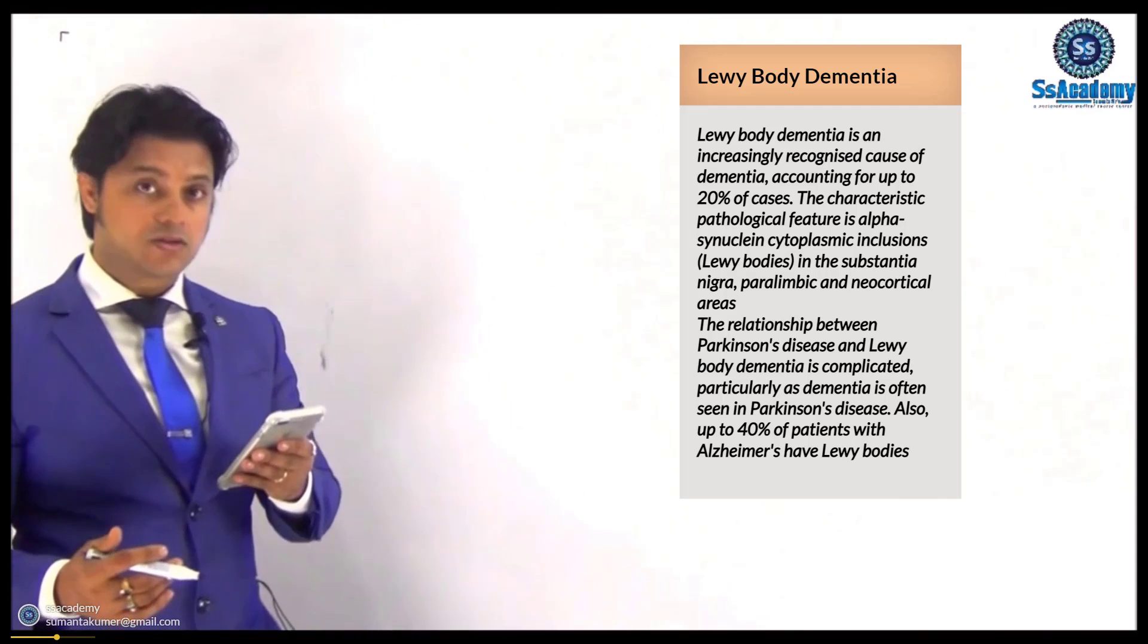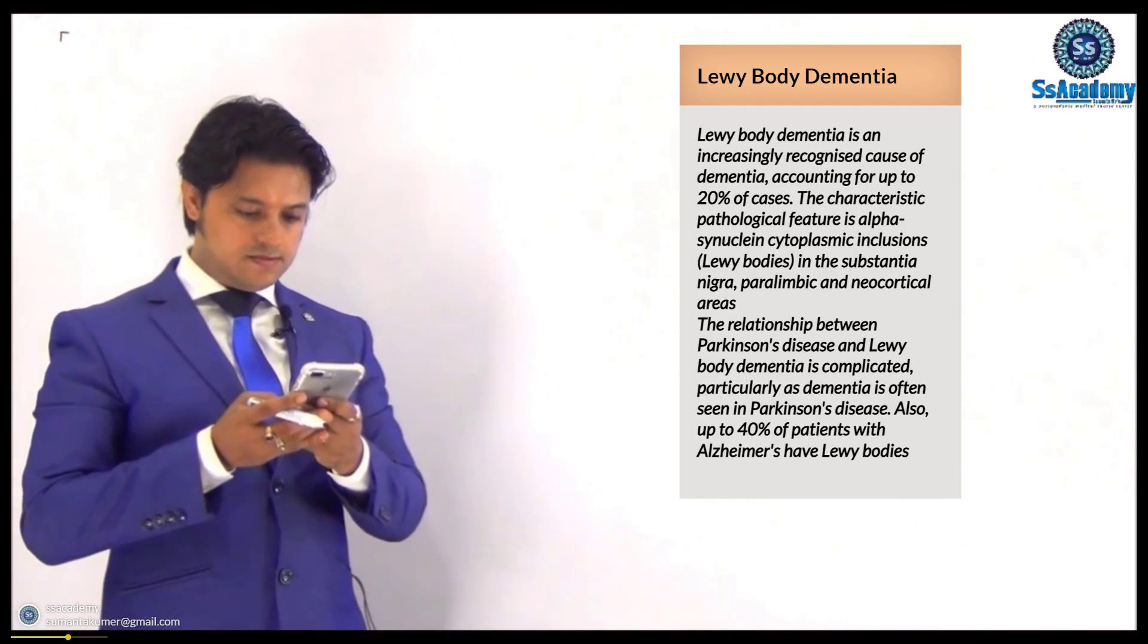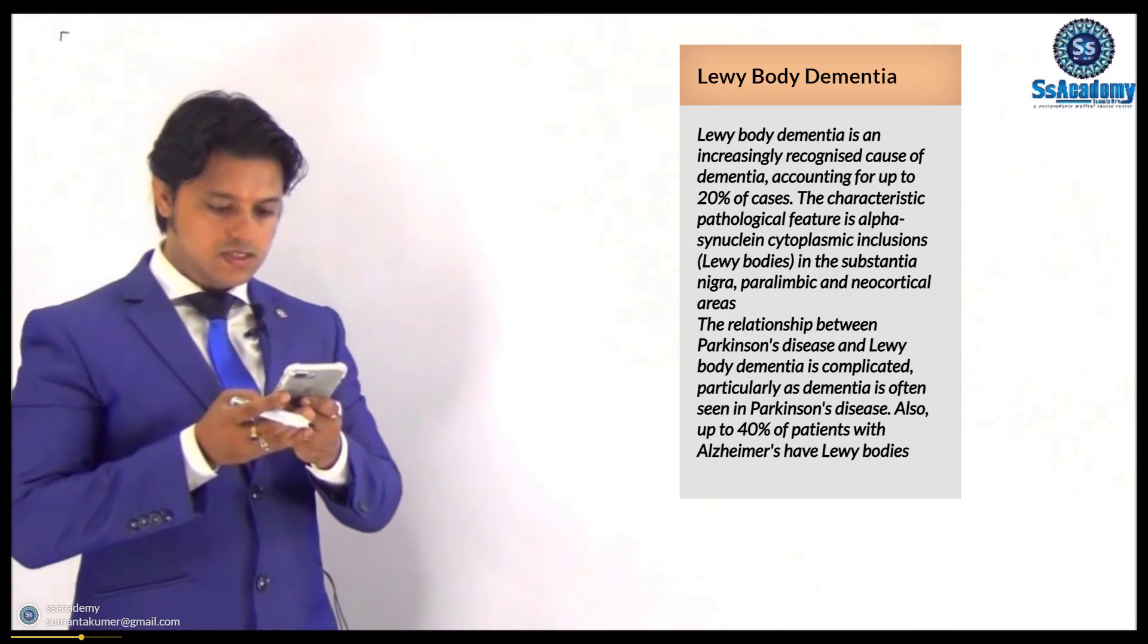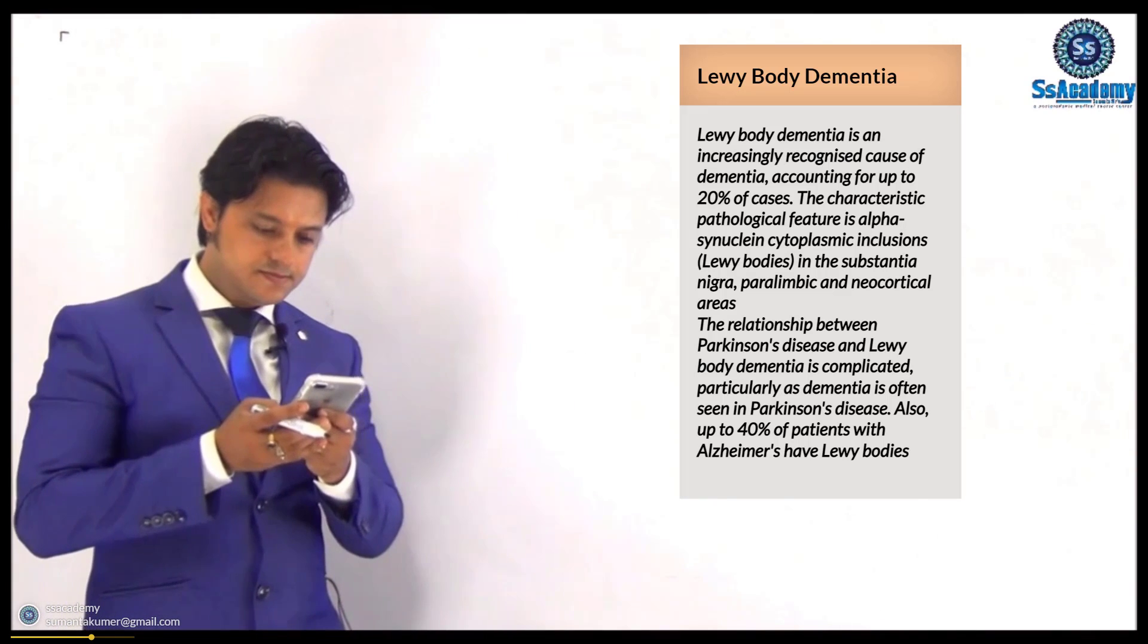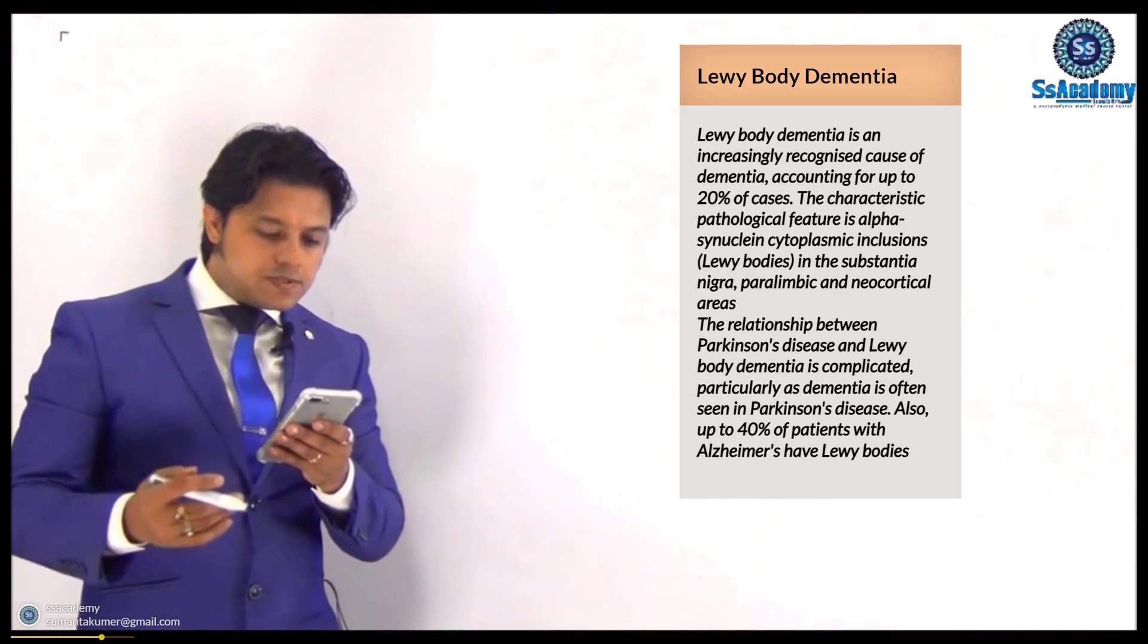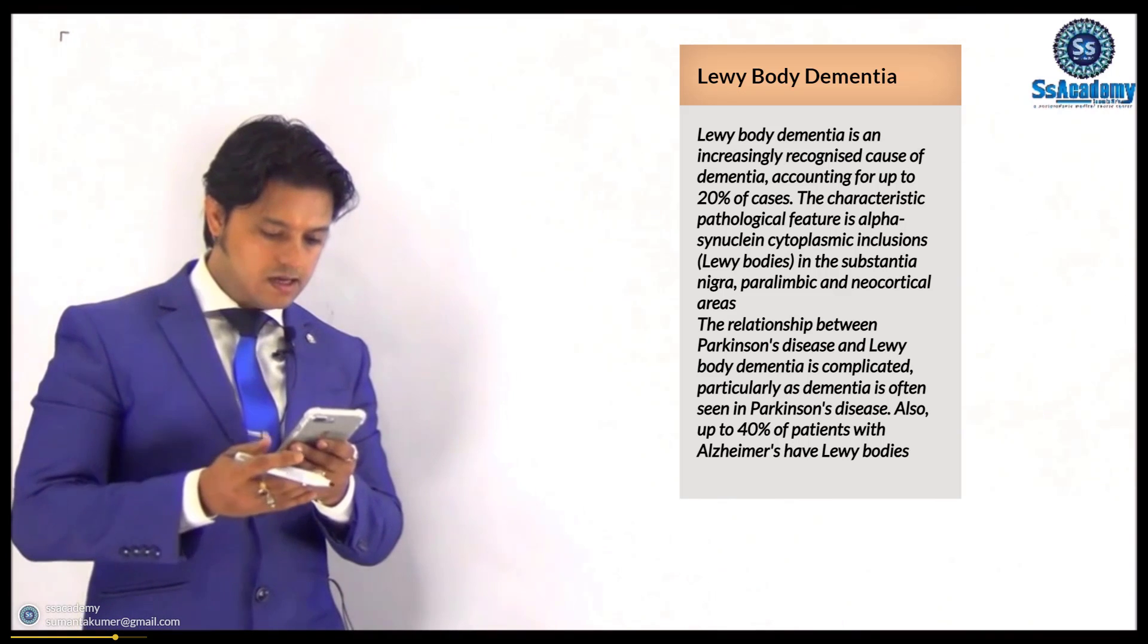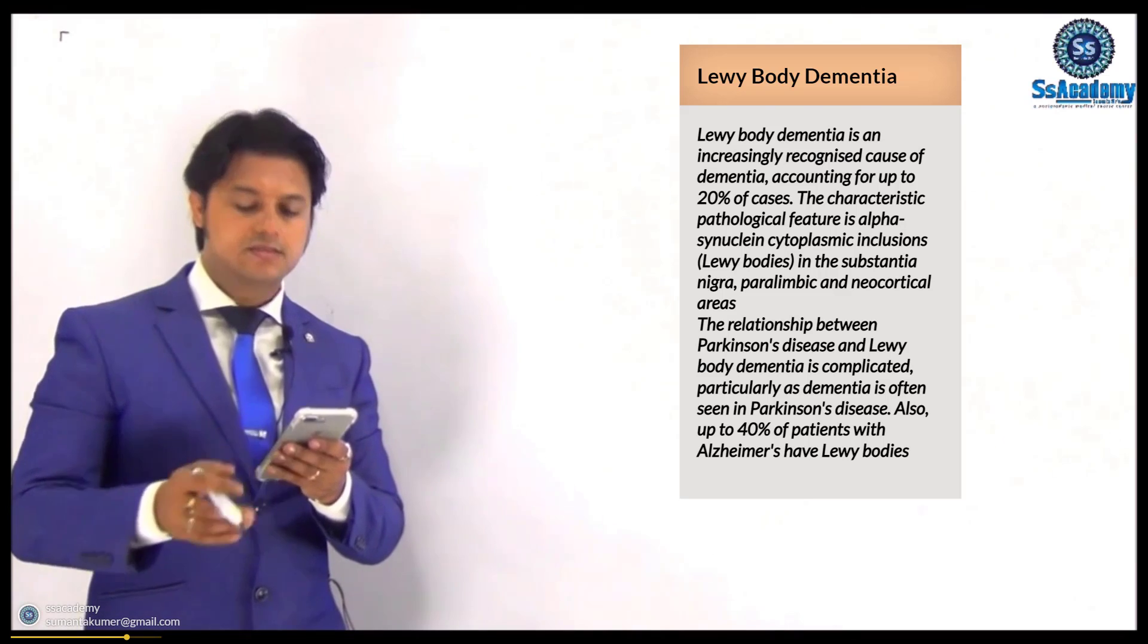The characteristic pathological feature is alpha-synuclein cytoplasmic inclusions. Circle inclusions, circle Lewy body in the substantia nigra, paralimbic and neocortical areas. So nigra as well as paralimbic and neocortical, circle.